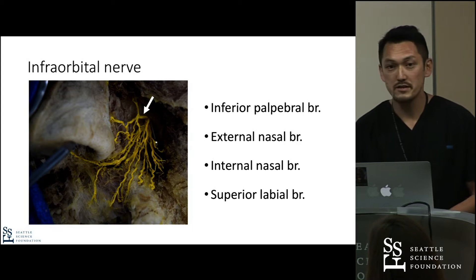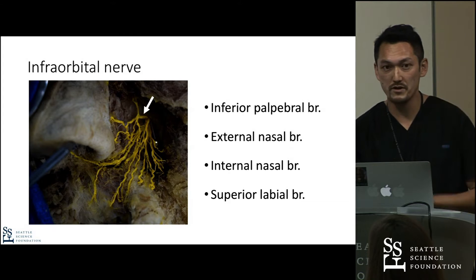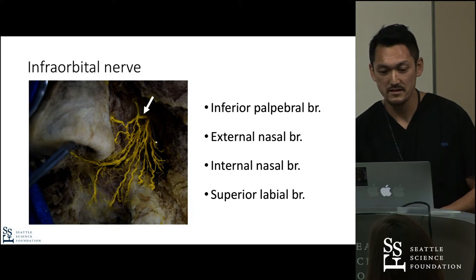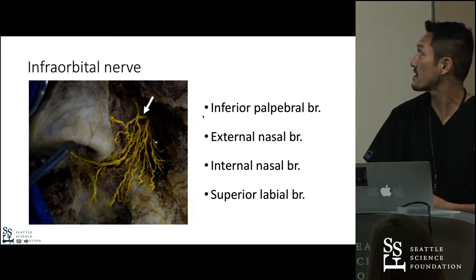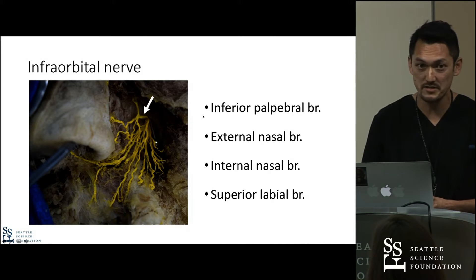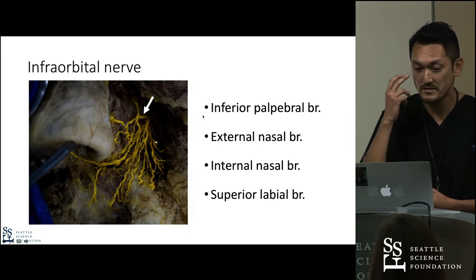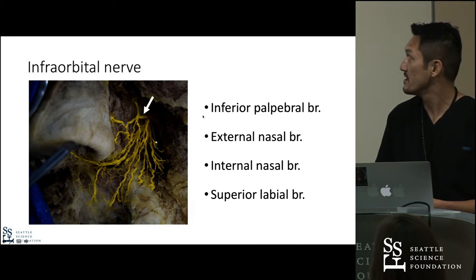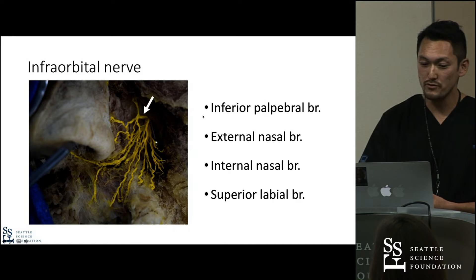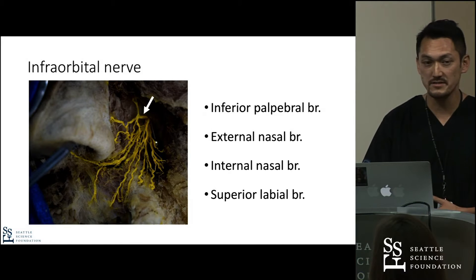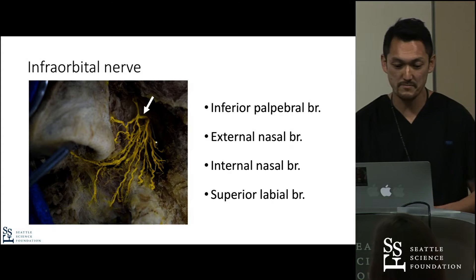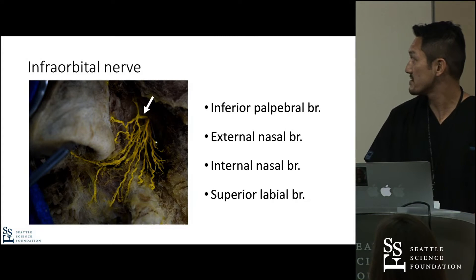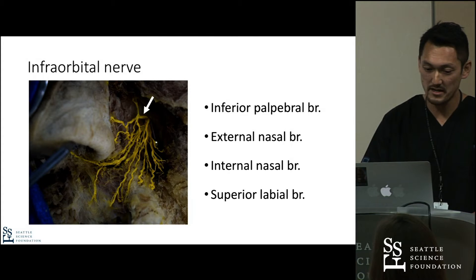The infraorbital nerve has four different branches. The first one is the inferior palpebral branch, which innervates the lower eyelid. Numbers two and three go to the nose: the external nasal branch and internal nasal branch. Number four is the superior labial branch.